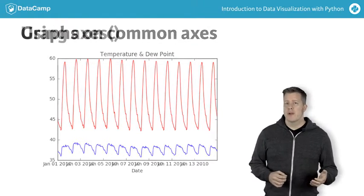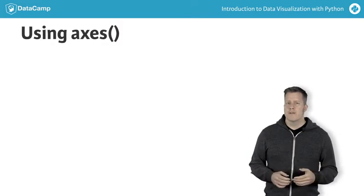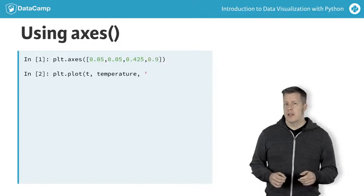Common axes are convenient for comparing curves directly, but they can get messy. We'll try to draw the same two curves, this time on multiple axes in the same figure. Overlaying curves is not useful when the scales differ wildly.